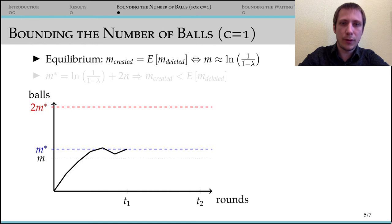The underlying idea of our proof is as follows. Intuitively, the system should settle around an equilibrium, where we create as many balls per round as we delete. For capacity one, this can be easily calculated.